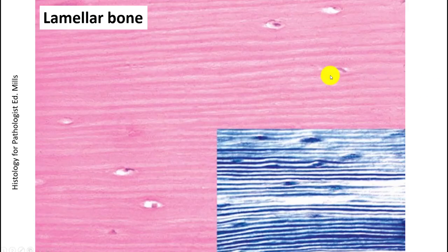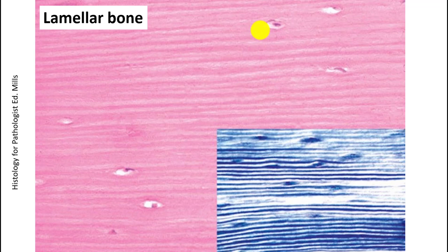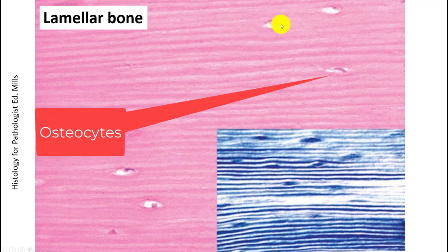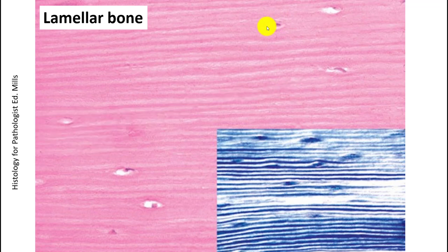Whether cancellous or cortical, all normal bone is arranged in what is referred to as the lamellar architecture — these parallel lamellae with a dark pink and light pink pattern. The osteocytes are oval-shaped and arranged parallel with the lamellae. You can highlight lamellar architecture with special stains or polarized light, but a simple trick is to crank down your condenser to see the lamellae much better.